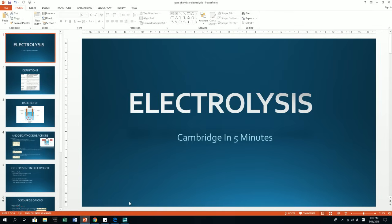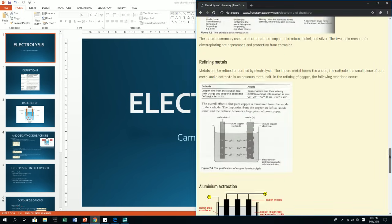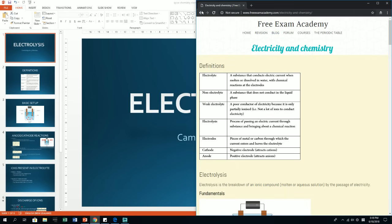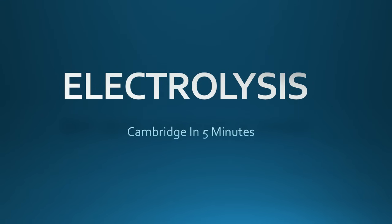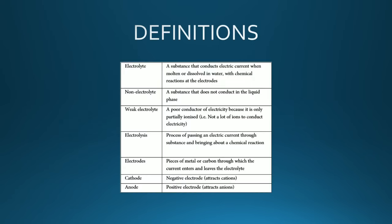Hey guys, welcome to another IGCSE chemistry revision video. Today we're going to be covering the topic of electrolysis, and I have just finished writing down all the notes on my website www.freexamacademy.com, so please go and pay a visit and check it out if you want. The main definition we'll be looking at is electrolysis, which is basically the process of passing an electric current through a substance, bringing about a chemical reaction.